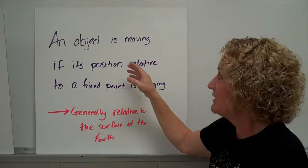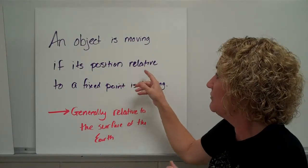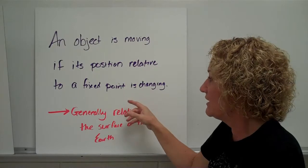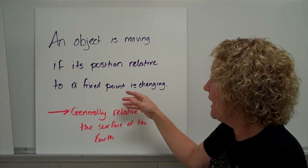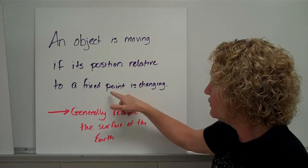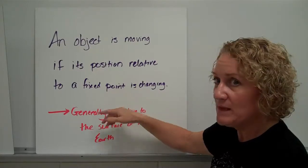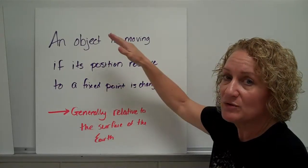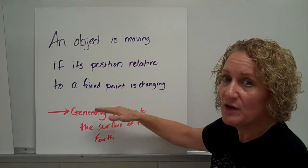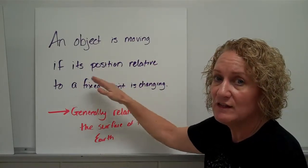The official definition says an object is moving if its position relative to a fixed point is changing. So if the position of my hand changes, if you look at that P and the position of my hand changes with respect to that, my hand's above it, below it, to the right of it,